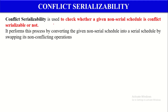Conflict Serializability is one type of Serializability technique which is used to check whether a given Non-Serial Schedule is Conflict Serializable or not. It performs this process by converting the given Non-Serial Schedule into a Serial Schedule by swapping its non-conflicting operations.